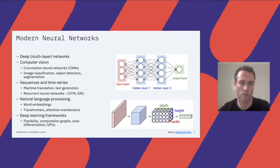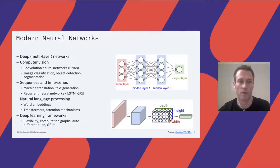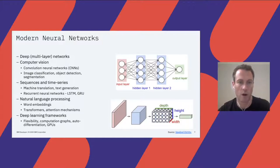Modern neural networks are called deep learning because they are made of multiple layers. In computer vision, convolutional neural networks are a core building block for state-of-the-art models, used in image classification, object detection, segmentation, and many other applications. For sequences and time series such as machine translation and text generation, recurrent neural nets have been extremely successful. In other NLP applications, word embeddings, transformers, and attention mechanisms have seen success. Modern deep learning frameworks provide computation graph abstraction, automatic differentiation, hardware acceleration support, and high levels of flexibility, allowing practitioners to create state-of-the-art models much more easily than previously.